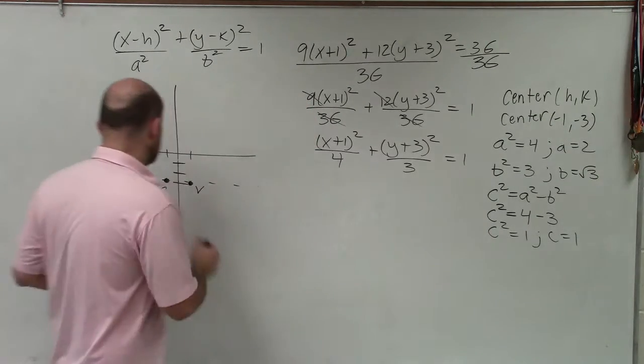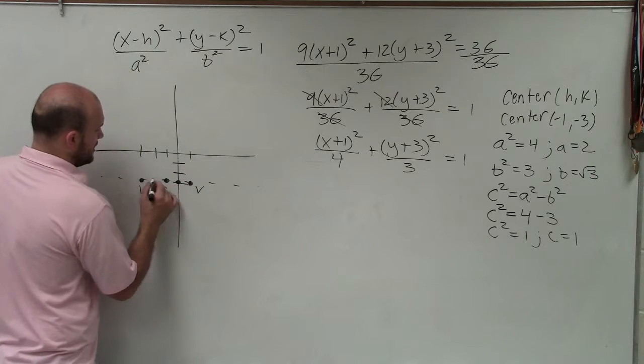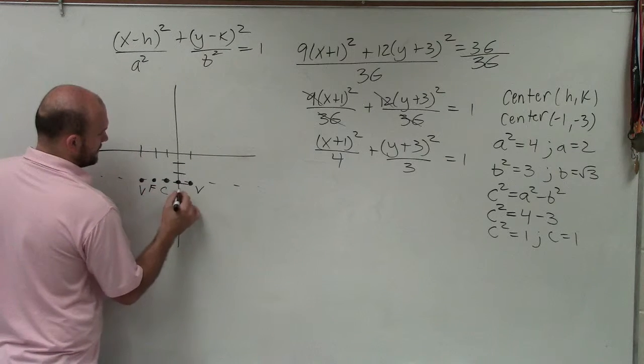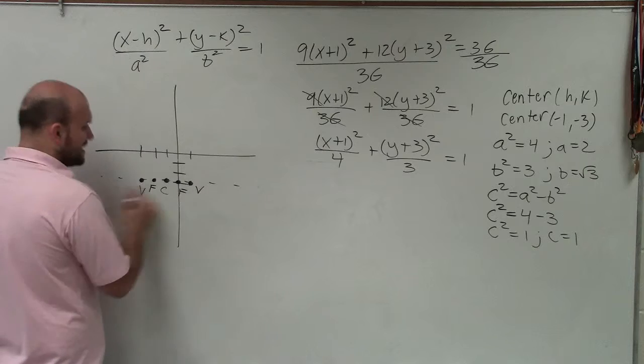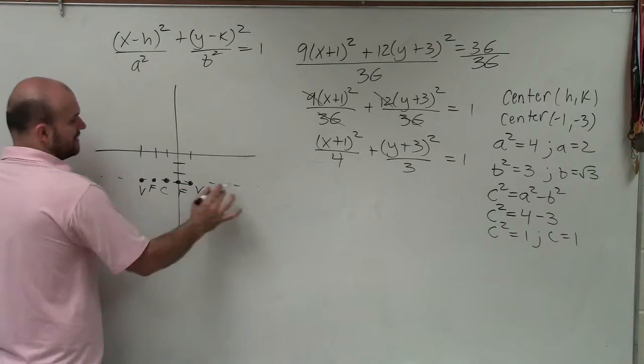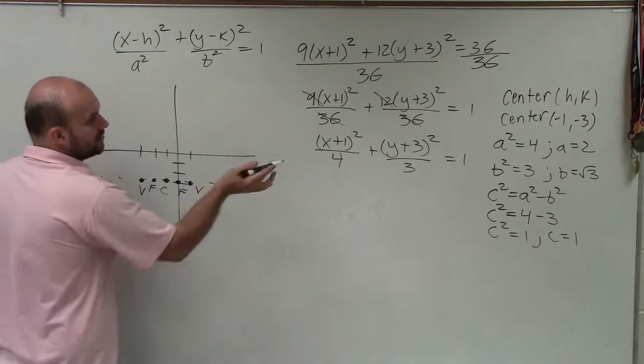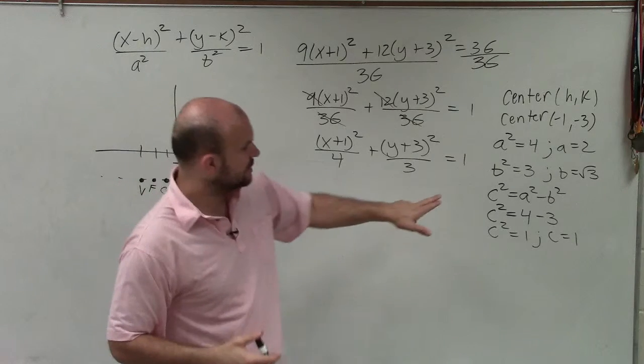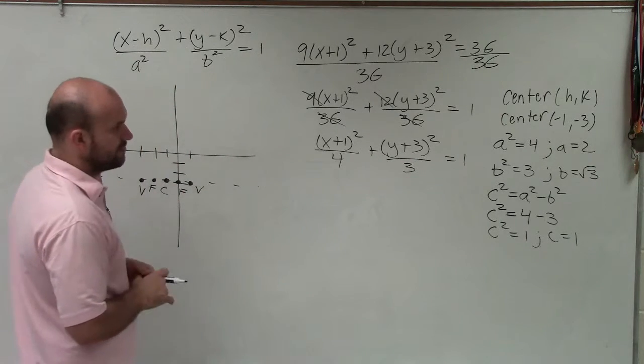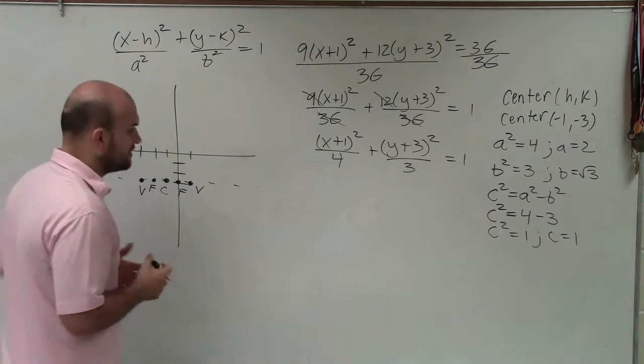My c is going to be my foci, which is just going to be to the right 1 and to the left 1. Because all your center, your foci, and your vertices all lie on this horizontal major axis. The only thing that does not lie on the major axis is going to be our co-vertices, which is a distance of 3, or square root of 3.